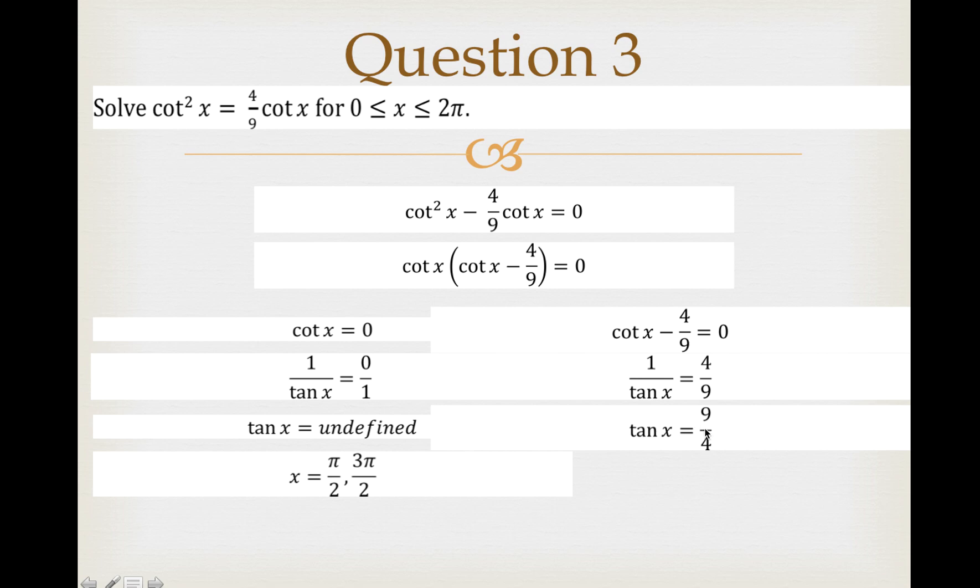This is also equivalent to tan x = 9/4. If you flip this, this must also be flipped. So x now is equal to tan⁻¹(9/4), and you will get x = 1.15.